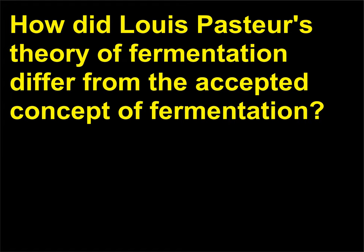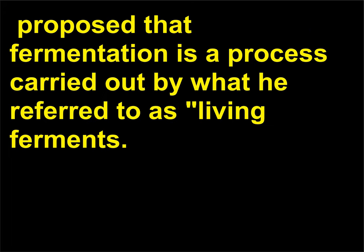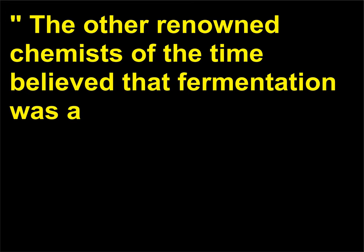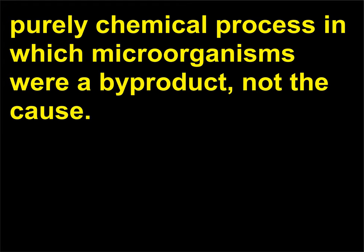How did Louis Pasteur's theory of fermentation differ from the accepted concept of fermentation? Louis Pasteur, 1822-1895, proposed that fermentation is a process carried out by what he referred to as living ferments. The other renowned chemists of the time believed that fermentation was a purely chemical process in which microorganisms were a by-product, not the cause.